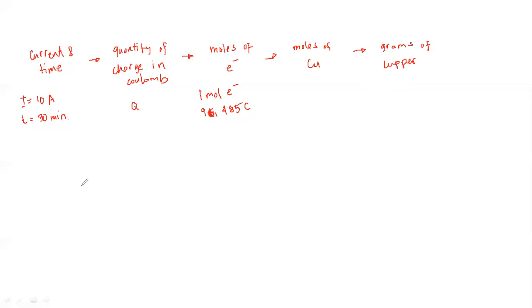Let's have our first step. To obtain the total coulombs of charge passed into the copper solution at the cathode, the amount of charge is equivalent to current times time. But take note, time must be in seconds, because a current of 10 amperes is equivalent to 10 coulombs per second.